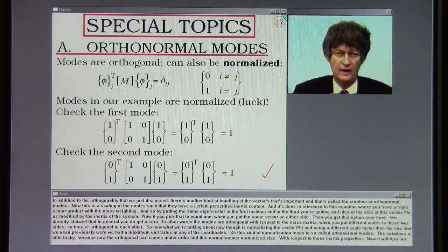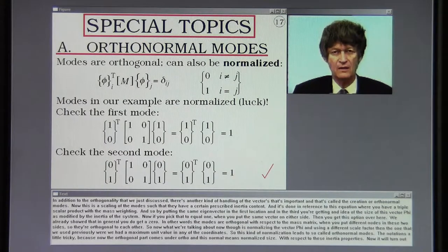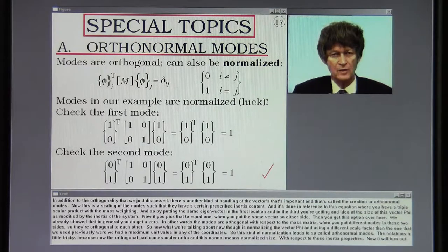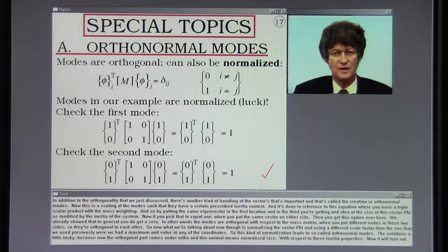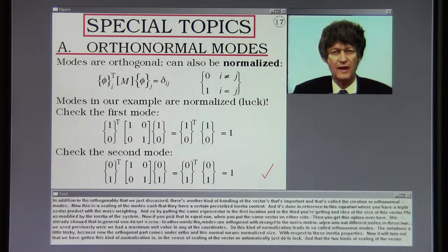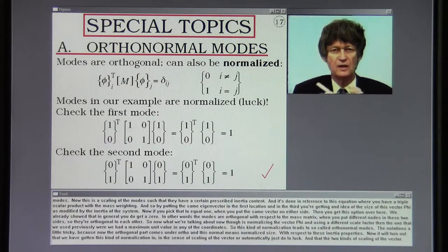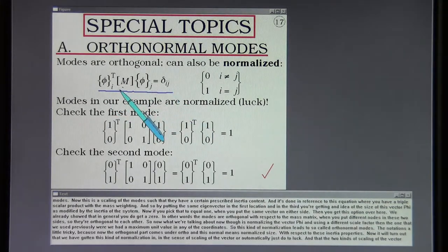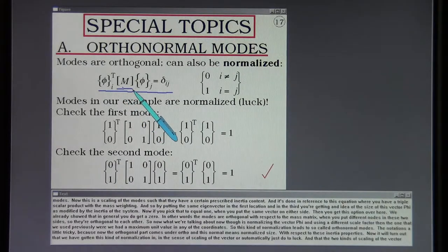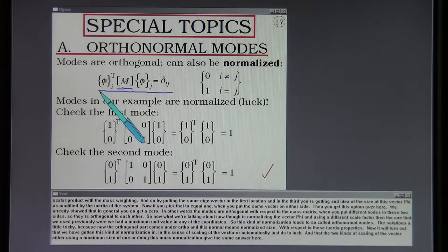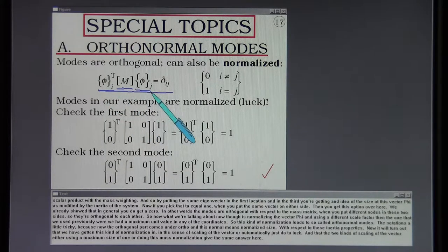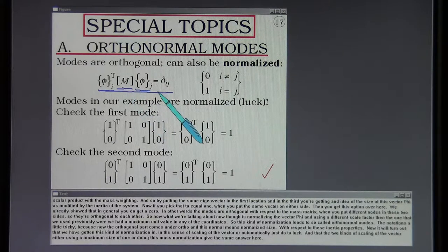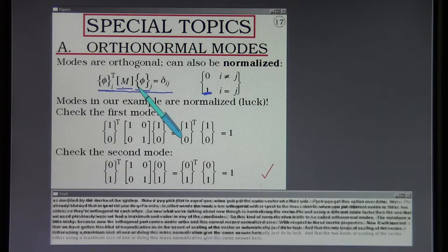In addition to the orthogonality that we just discussed, there's another kind of handling of the vectors that's important. That's called the creation of orthonormal modes. This is a scaling of the modes such that they have a certain prescribed inertia content. It's done in reference to this equation where you have a triple scalar product with the mass weighting. By putting the same eigenvector in the first location and in the third, you're getting an idea of the size of this vector phi as modified by the inertia of the system.